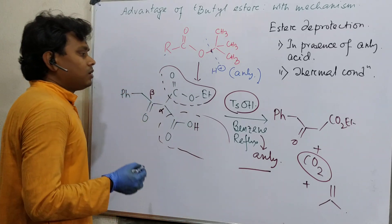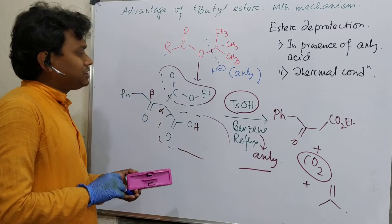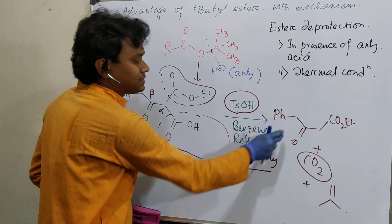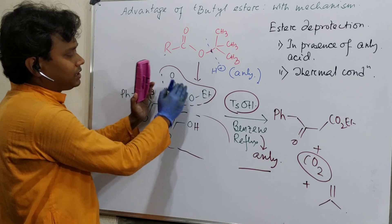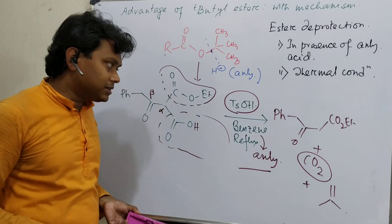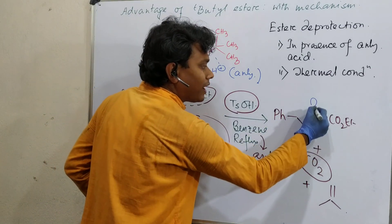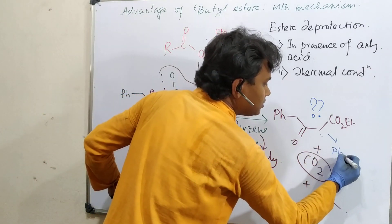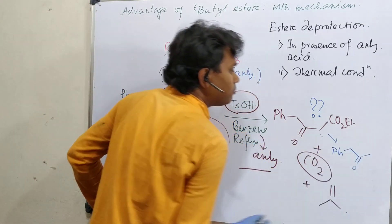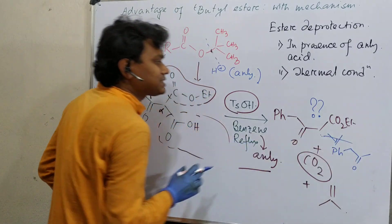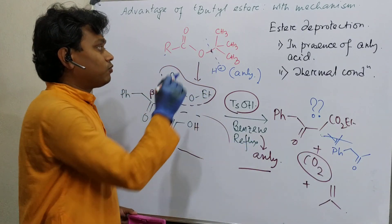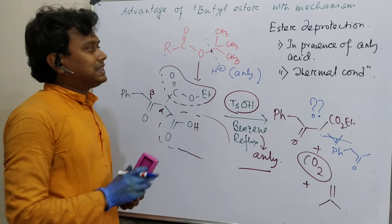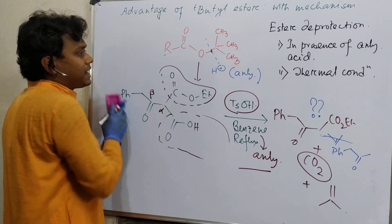You may wonder why the reaction stops there and does not continue to hydrolyze the ethyl ester. The reason is the anhydrous condition: under anhydrous conditions, a normal ethyl or methyl ester cannot be cleaved by this mechanism. Only the tertiary butyl ester undergoes this selective cleavage. That is the first uniqueness of this process.